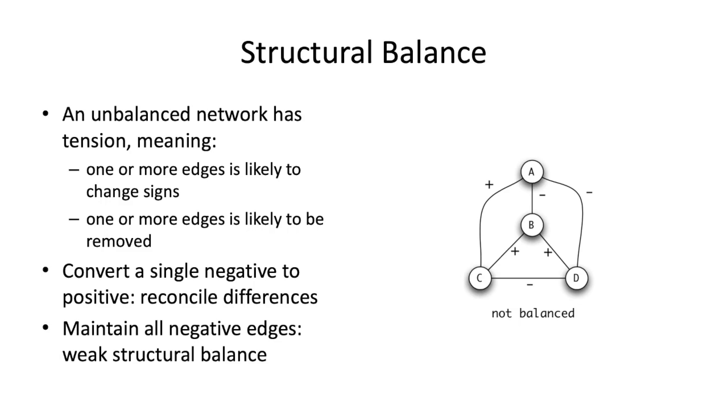So unbalanced network, this is tension. I got this example graph here with A, B, C, and D, and if we look at a few of these triangles, there's something a little off here. If you look at the A, B, D triangle, B and D are buddies, they're friends, and A is the one they don't like. So that one works fine.